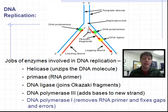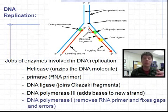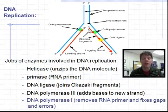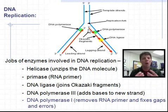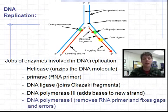We also have DNA polymerase III, which adds bases to the new strand, matching up A's with T's and G's with C's. Then we have DNA polymerase I, which removes RNA primers and fixes gaps and errors within the copying process. Every once in a while errors are made, but there's a molecular mechanism to find and fix those errors — and in most cases, those errors do get fixed.